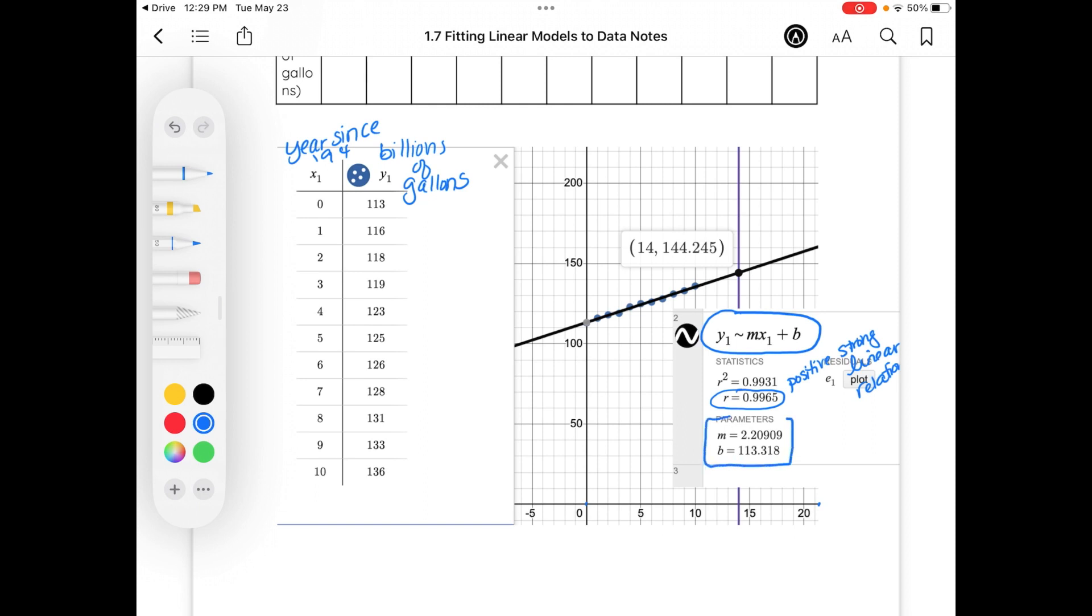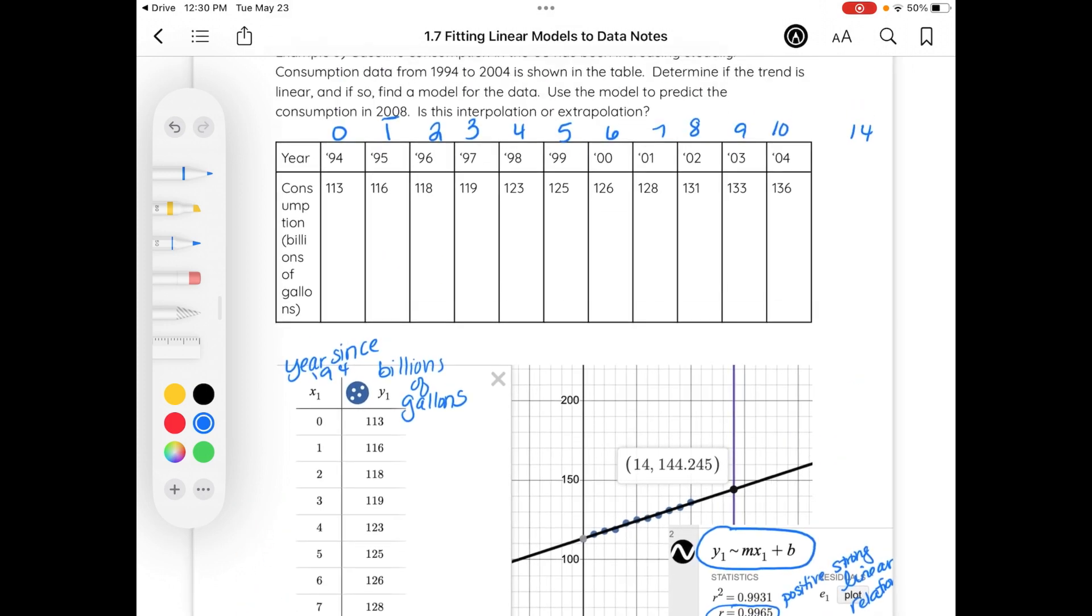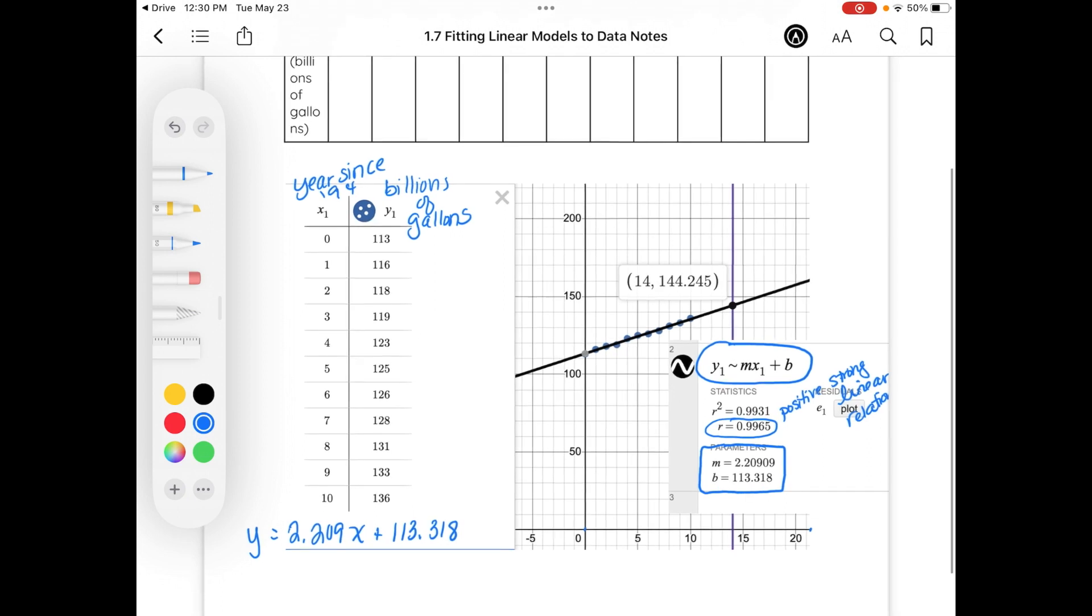Notice it gives me my parameters. What y equals mx plus b. So our equation is going to be y equals, going to three decimal places unless it tells us otherwise, 2.209 times x plus 113.318. We're specifically looking at then making a prediction for 2008. Well, x is equal to 14 for the year 2008 since 2008 is 14 years after 1994. This is extrapolation since it's outside of the domain. Our domain in this case only was from 0 to 10.